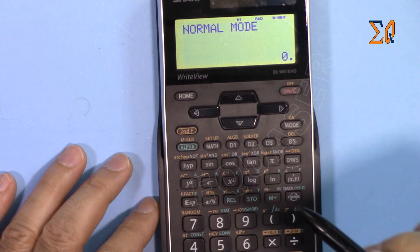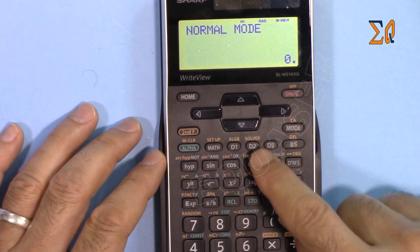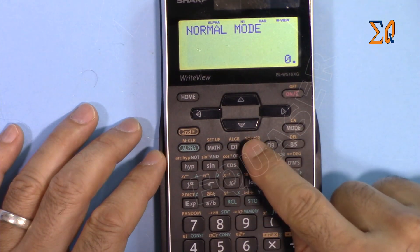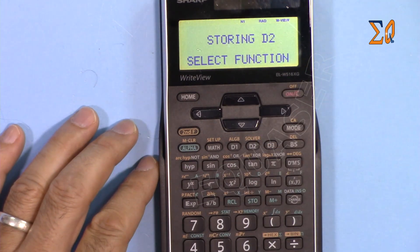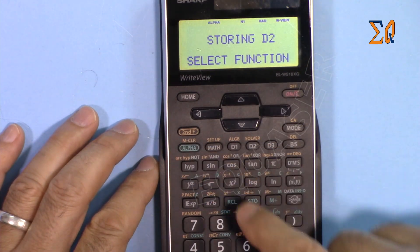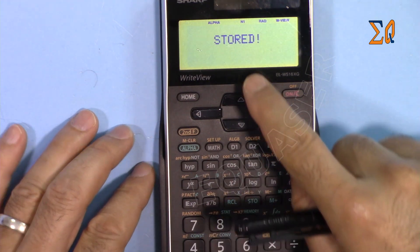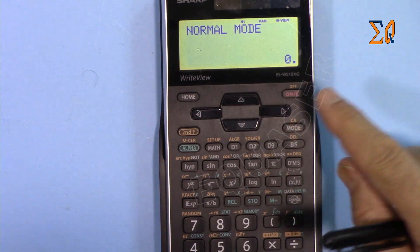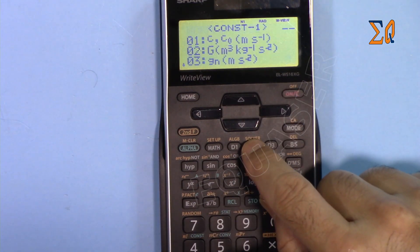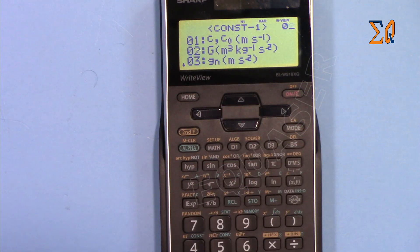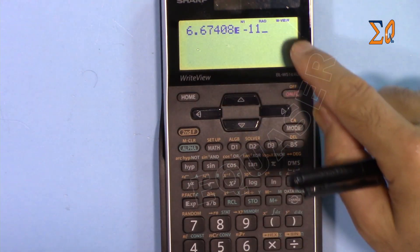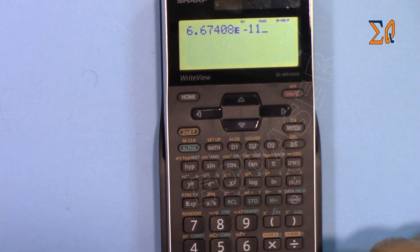Press STO and D2. Now it asks for the function. Press second function, press alpha, and then constant. Now if you need to bring a gravitational constant, just press 2 and then 0, 2. So 0, 2 will be entered within your calculation and then you can proceed with other values that you want.